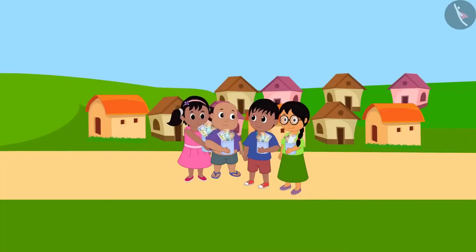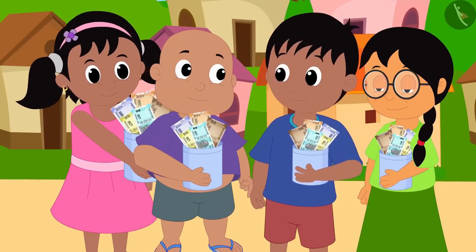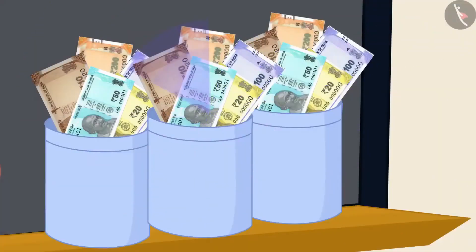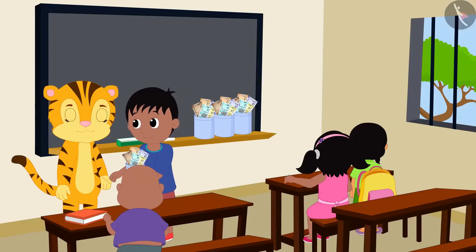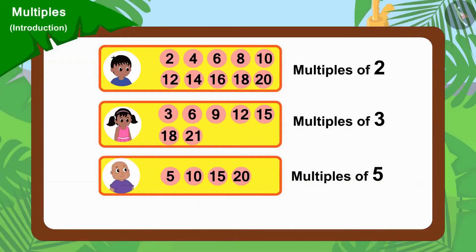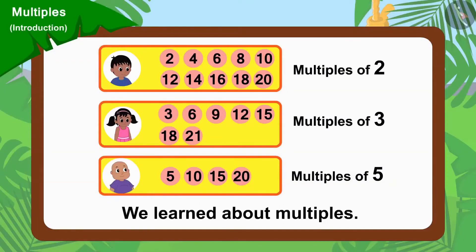Raju, Pinky, Meenu and Bablu amassed a lot of donations through their hard work. The next day, they gave all the money they had collected to their teacher and got a lot of appreciation from her. Children, in this video, we learned about multiples. In the next video, we will learn more about it through some interesting examples.